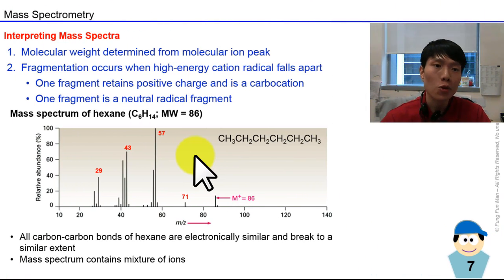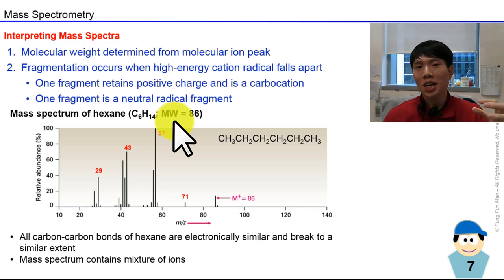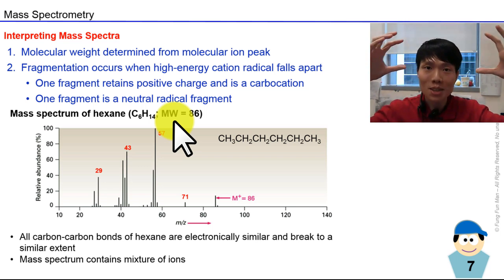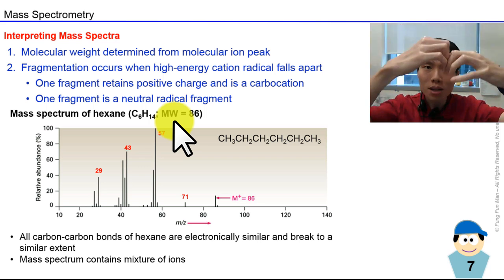So when we interpret mass spectra, what do we do? We can see the molecular weight coming out from this, and we know that when we excite a molecule by removing electrons, it becomes cations and radicals. High energy means it's unstable and will fragment.